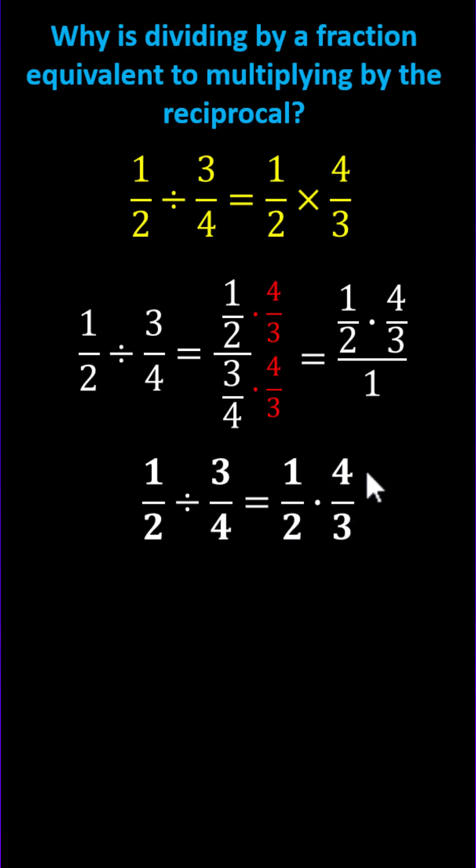Let's go ahead and finish by multiplying. 1 half times 4 thirds is 4 sixths, which simplifies to 2 thirds.